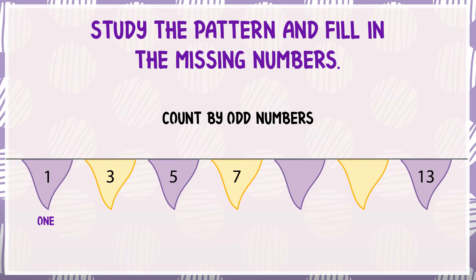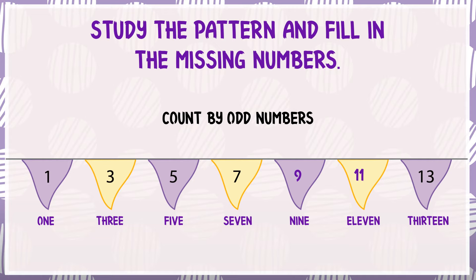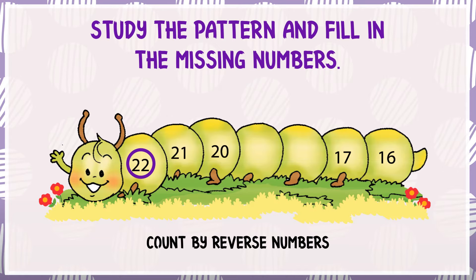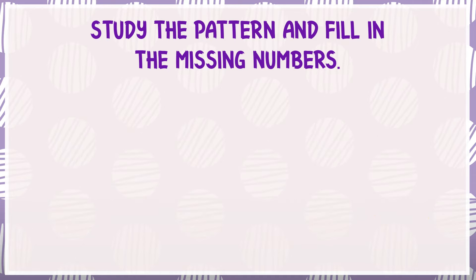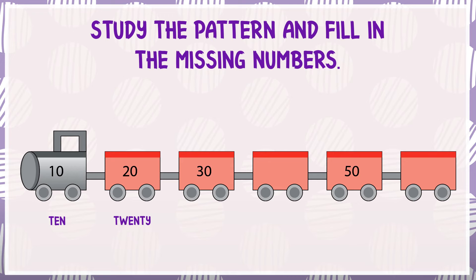10 flowers. Now let's change the pattern and fill in the missing numbers. 21, 20. So what will be the next missing number? 19, 18, 17, 16. Then 20, 30. So what will be the next missing number? 40, 50.